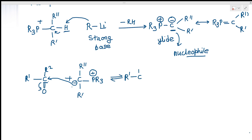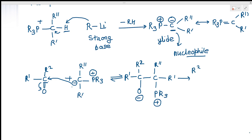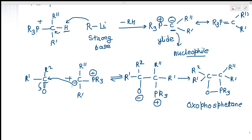A new bond is formed between the oxygen and phosphorus — one end carries a negative charge and the other a positive charge — giving a cyclic structure. This is a four-membered ring called an oxaphosphetane. This four-membered cyclic transition state is highly strained and unstable.